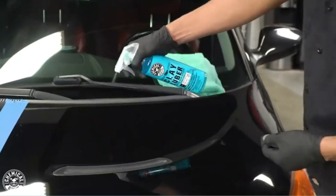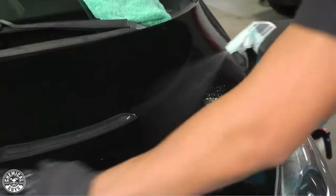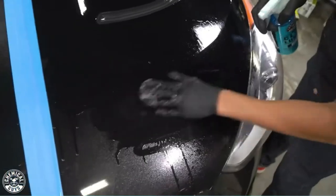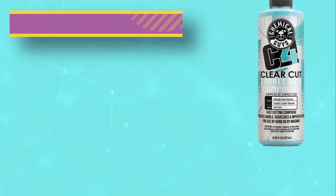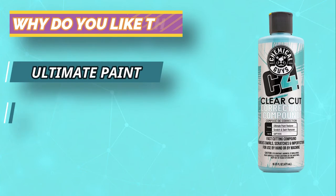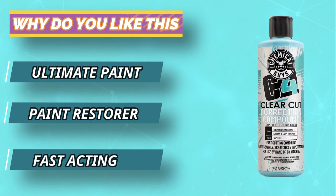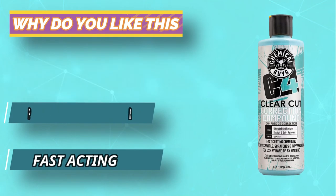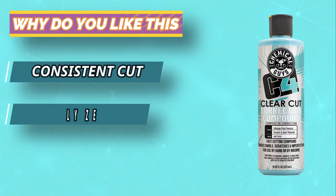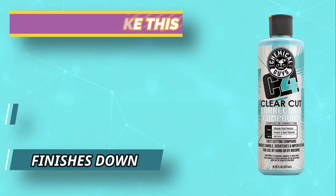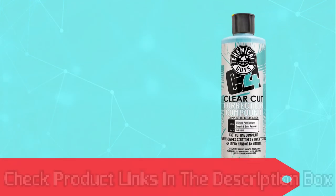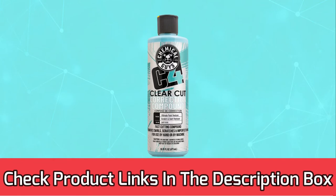Easily remove defects, acid rain marks, etching, and up to 1200-grit sanding marks, and finish your paint off to perfection while producing virtually zero dust and maintaining a consistent cut from start to finish to return your paint to its mirror-like glory in less time than ever before. Chemical Guys C4 maintains a consistent cut from start to finish for ultimate control and predictability. The superior heavy-cut compound and paint correction scratch remover delivers consistent results every time.